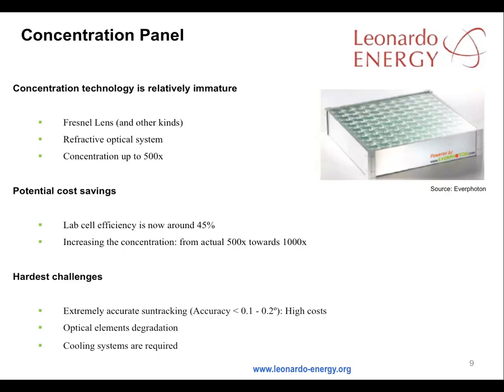Cell efficiencies of 45% are being achieved today in laboratory conditions. At module level, concentrated PV efficiency is around 30%. However, to be effective, the systems rely on sun tracking to an accuracy of less than 0.2 degrees, and they remain expensive. Concentrated light comes with concentrated temperatures, so cooling systems are required, and the optical elements can suffer from quite rapid degradation.